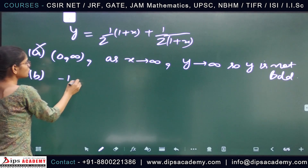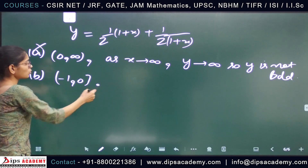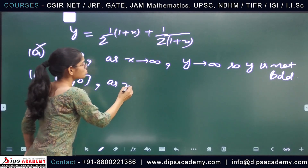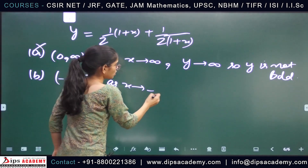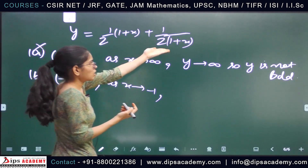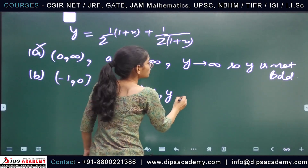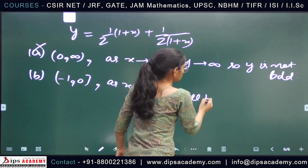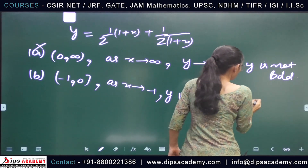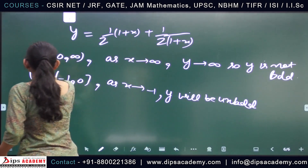Option B says y is bounded on (-1, 0). As x → -1, the term 1/(2(1+x)) → ∞, so the solution is unbounded. Therefore option B is also incorrect.